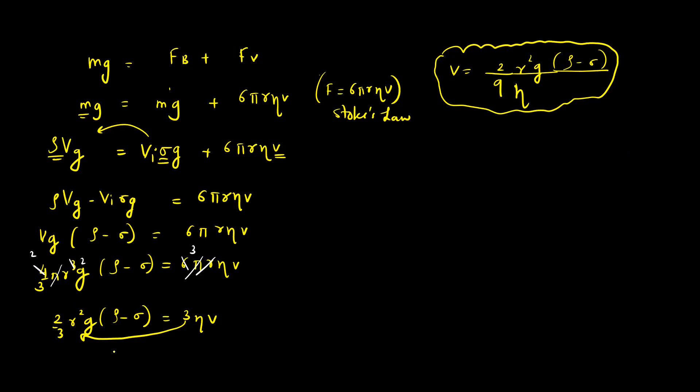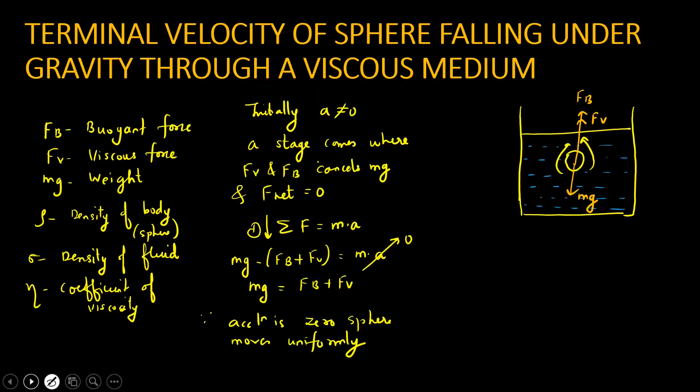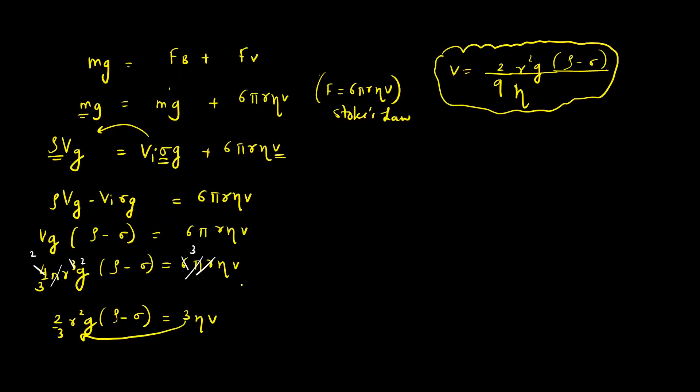But we don't have to discuss that much for boards. Boards came in 2022, so you have to learn it yourself. This derivation is of how much marks? It came for around 3 to 4 marks. I am not sure. Minimum 3 marks. Write it in a very proper manner. You will get 3 to 4 marks for it.